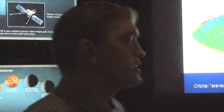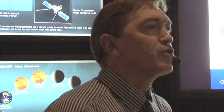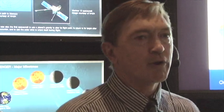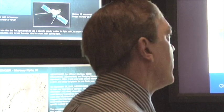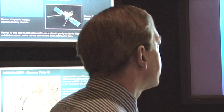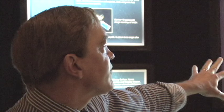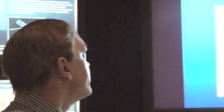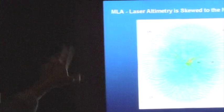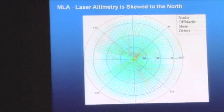Why it's important that we're getting stereo is that we're trying to also create the first global topographic map of Mercury. One of the limitations that our orbit is giving us—this is basically a coverage map that will be, that is projected for the laser altimeter.